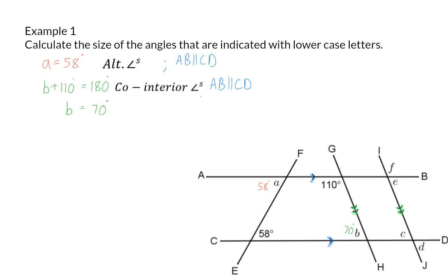As soon as you calculate an angle, add it to the sketch. Because in this case, if we now move on to angle C, you will see that angle C along with angle B forms part of an F. This means that angle B and angle C are equal. So angle C is also 70 degrees, with the reason corresponding angles. But this time we used the second pair of parallel lines, which was GH and IJ.